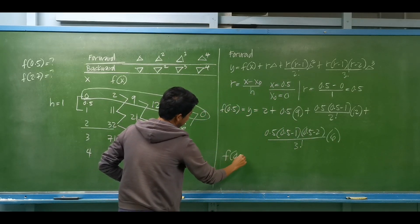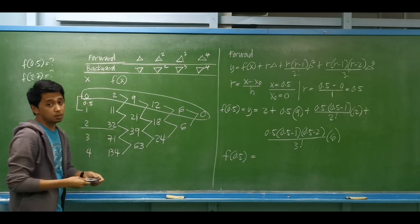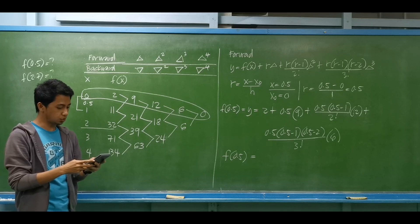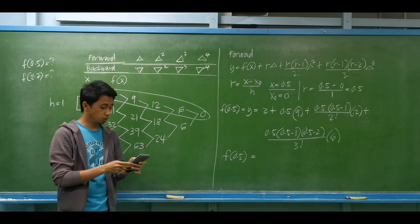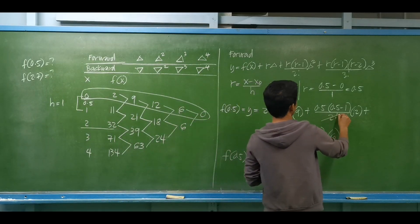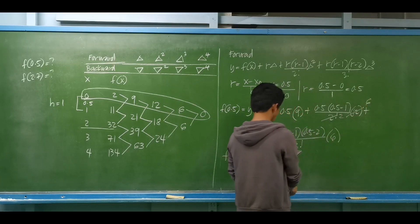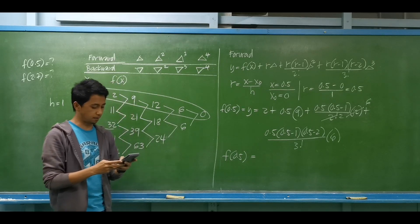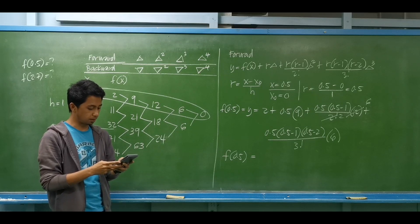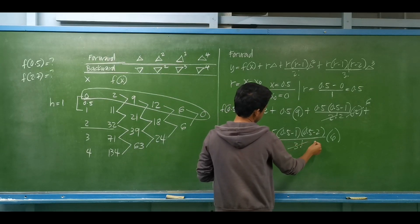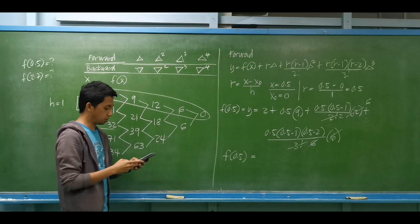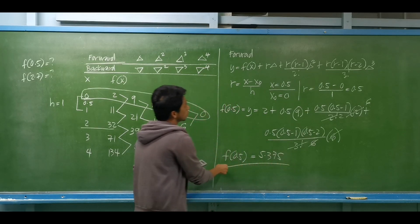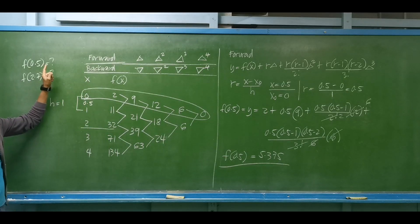Simplifying: f(0.5) = 2 + 0.5×9 + [0.5×(0.5−1)/2]×12 + [0.5×(0.5−1)×(0.5−2)/6]×6. Note that 3 factorial equals 6, so we can cancel. The value of f(0.5) is 5.375. We used the forward Newton-Gregory method to determine f(0.5).